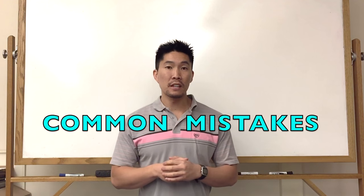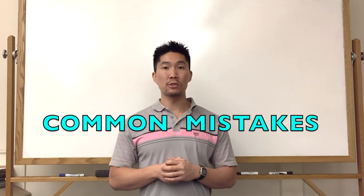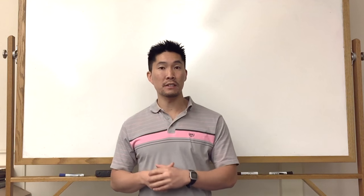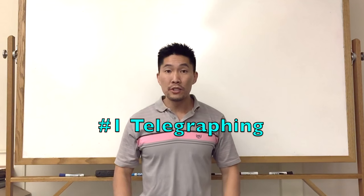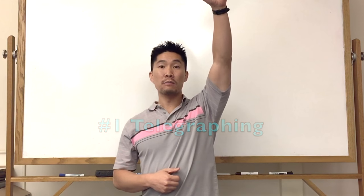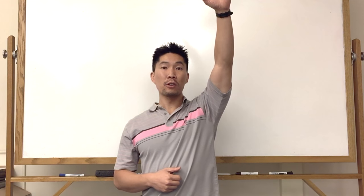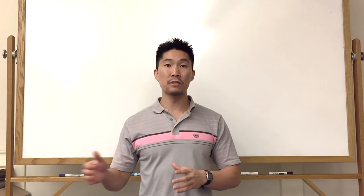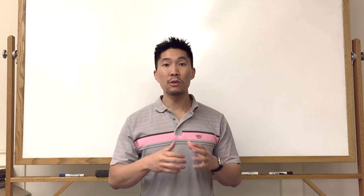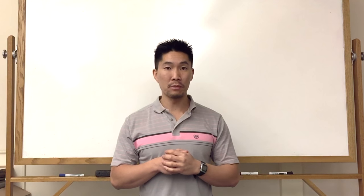There are a few common mistakes that setters usually make when they're trying to attack the ball on the second contact. The first one is that they show the attack too early. When they jump up in the air, their left arm is already up and they're showing very early that they're going to dump the ball which makes it a lot easier for the defenders and blockers on the other team because they see exactly what you're doing before it actually happens.